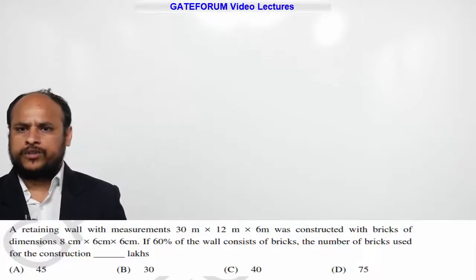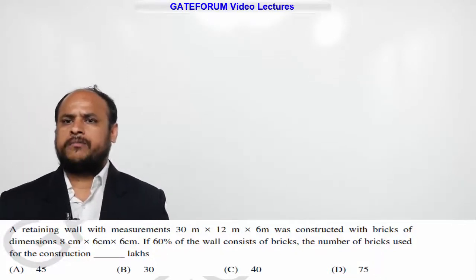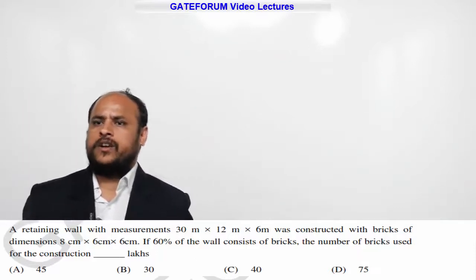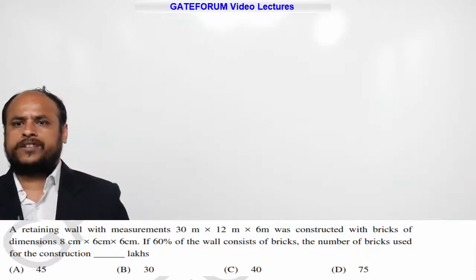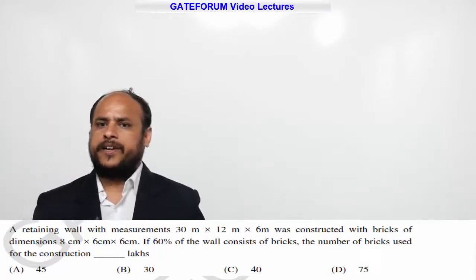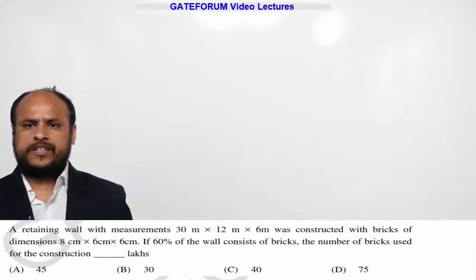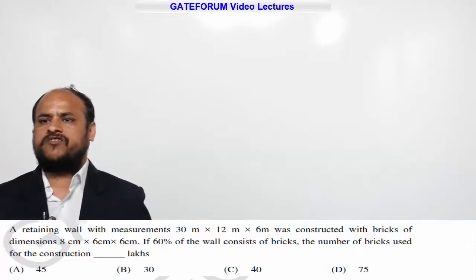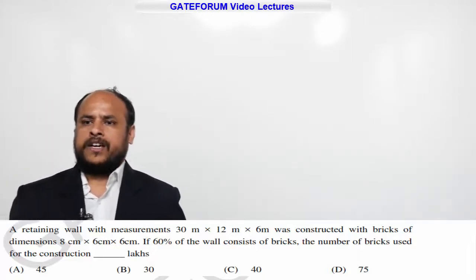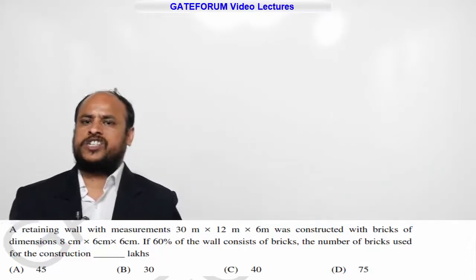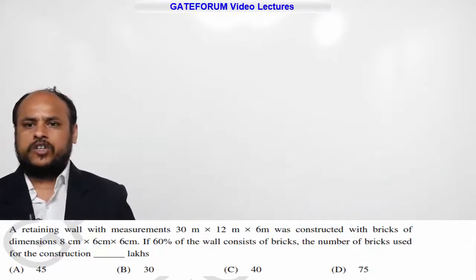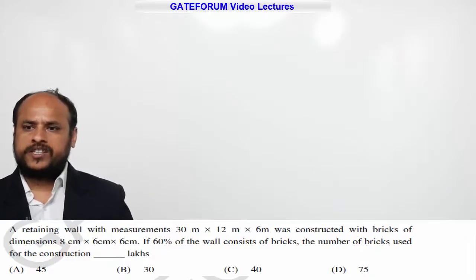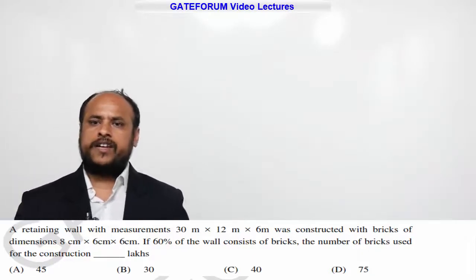This question belongs to civil. A retaining wall with the measurements 30 meters into 12 meters into 6 meters was constructed with bricks of dimensions 8 centimeters into 6 centimeters into 6 centimeters. If 60 percent of the wall consists of bricks, the number of bricks used for the construction is: Option A is 45 lakhs, Option B is 30, Option C is 40, Option D is 75.